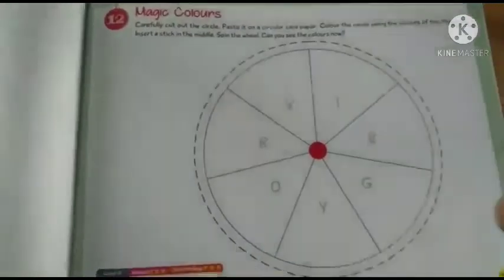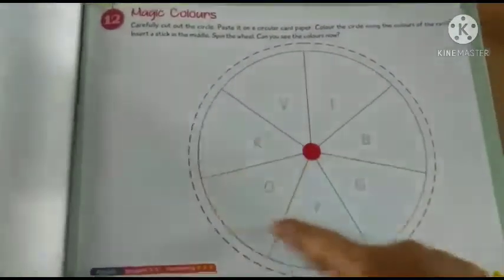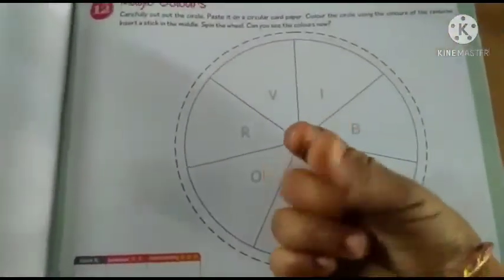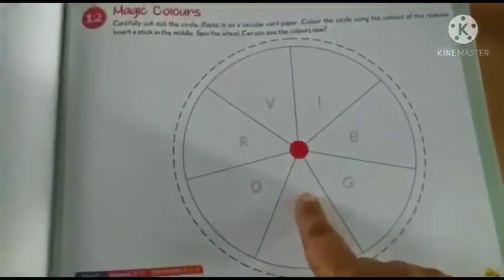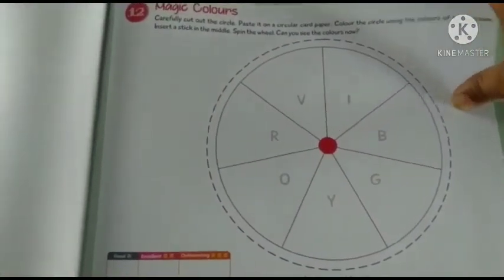Bhoura pata hai na? Aapko bhoura kaysi spin kartay hai, voisi se hi aapko yhe middle me pakad ke yhe spin karna hai. Uske baat kya hota hai? Yhe aapko colors dekhne hai. Okay, iska video bana kya hai, aapko mujhko bhej na hai.